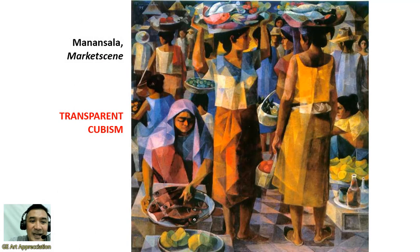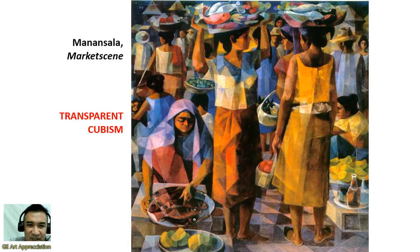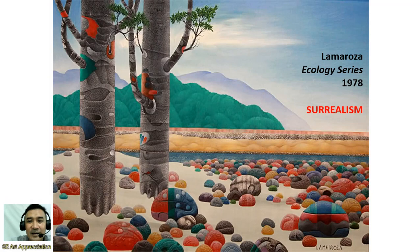We also have Manansala, who is famous for his transparent cubism. This is a scene in a market — he entitled this painting Market Scene. Take a look at the women's clothing: their garments are transparent and cube-like — that is why the style is called transparent cubism. La Marosa's style of painting is more on surrealism; he entitled his painting Ecology Series in 1978. Surrealism makes it look as though the painting is real.